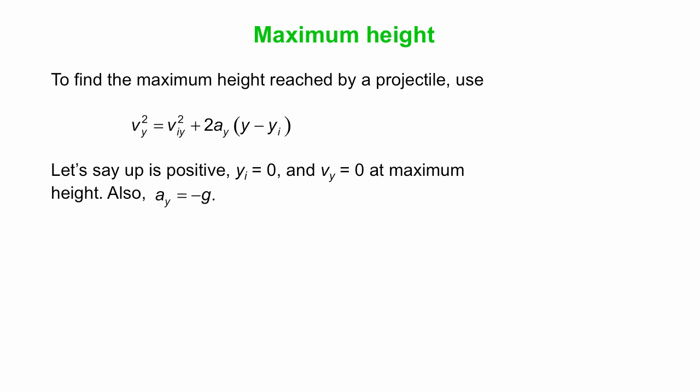We'll start by thinking about maximum height now. Let's derive an equation. We're going to start with this general constant acceleration equation and we'll make the following definitions. Up is positive. Y initial, where we start from, we'll just call that zero. At maximum height, the vertical component of the velocity, Vy, is zero. It was positive moving up before that, negative moving down afterwards. And Vy is zero at maximum height. Also, acceleration is only that due to gravity, and down is in the negative direction, so Ay is negative G.